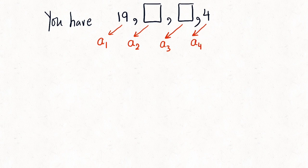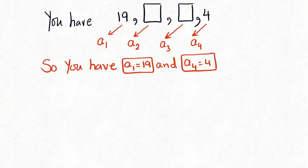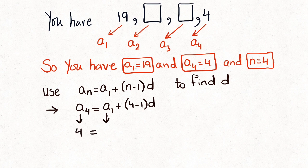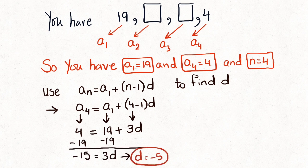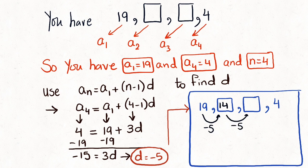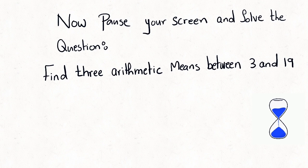We are dealing with a1 = 19 and a4 = 4, with n = 4. Recall the formula a_n = a1 + (n − 1) × d, replace the values, and find d. Once you have d, go back to 19 and keep applying d to find each term in the sequence.